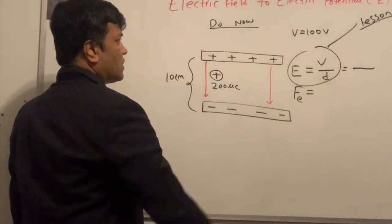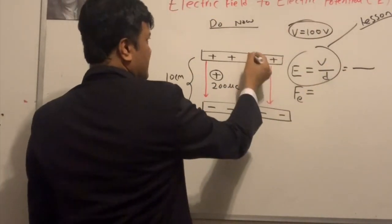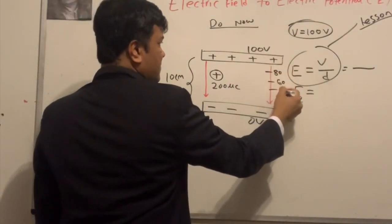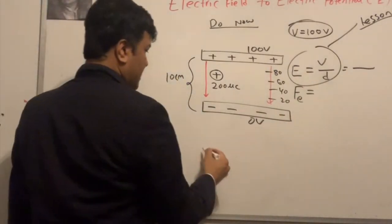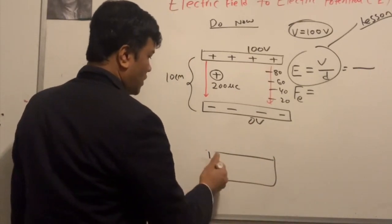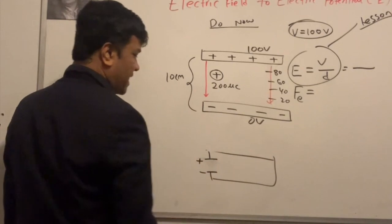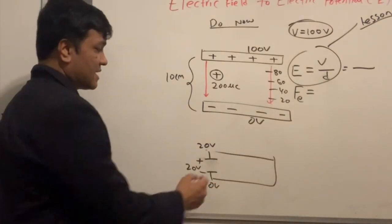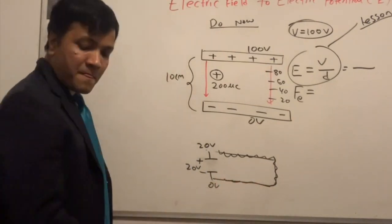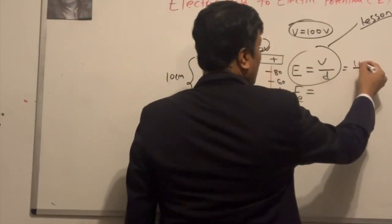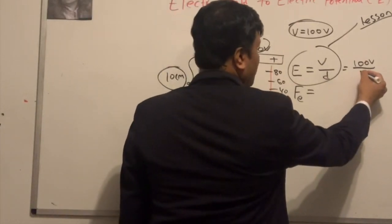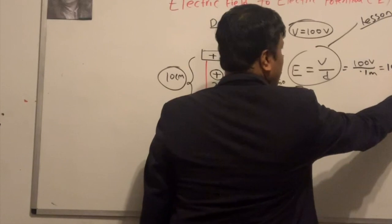The voltage is 100 volts — not 200 microcoulombs, that's the charge. Voltage is the potential difference: this plate is 100 V, the other is 0 V. There is a voltage drop, just like in an electric circuit. So V = 100 volts and d = 0.10 meters, giving E = 1000 volts per meter.